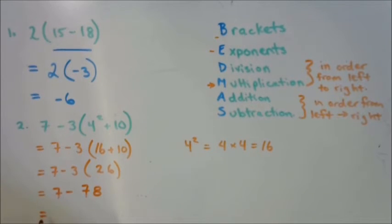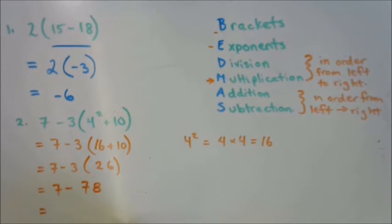And the last operation left is 7 minus 78. Which if you're not sure, you could go to your number line. You're starting at 7 and you're moving to the left 78. That's going to leave you at negative 71.